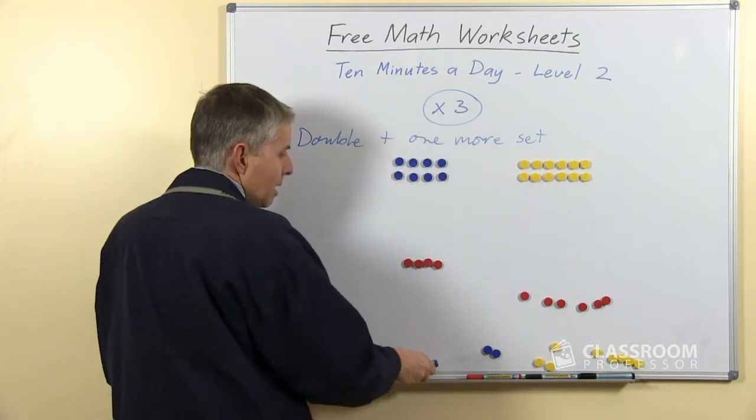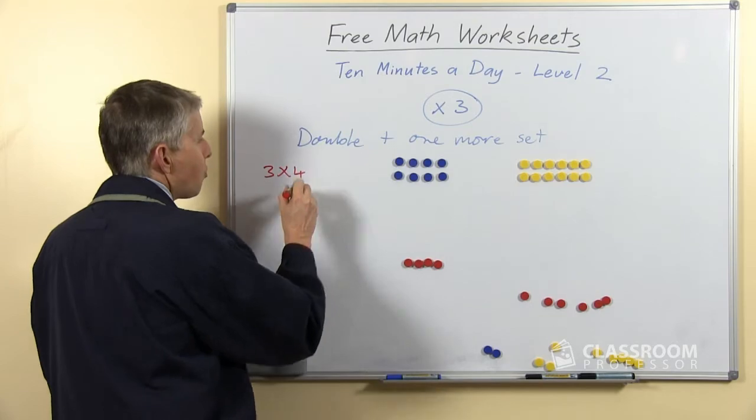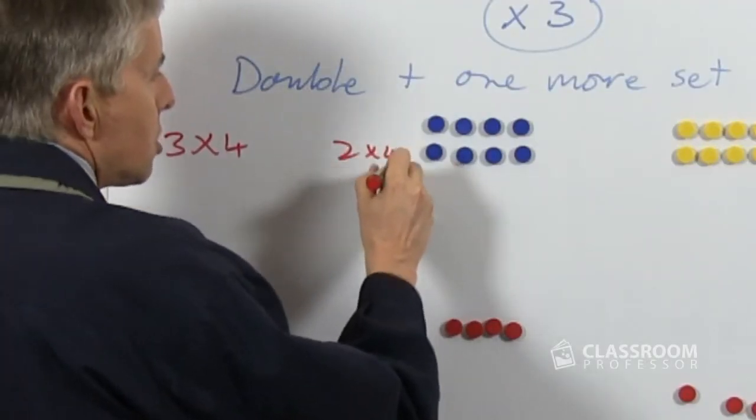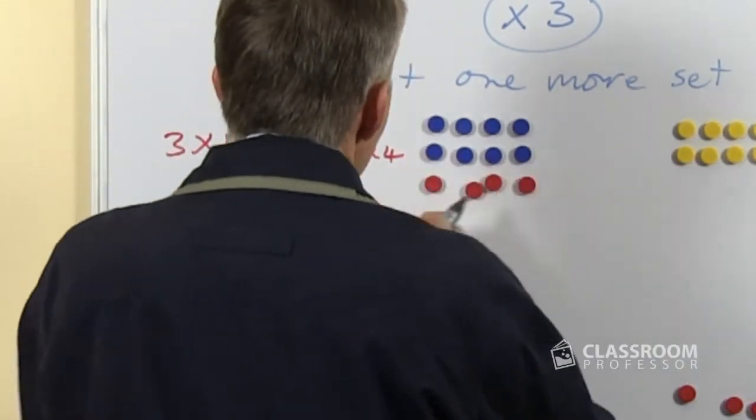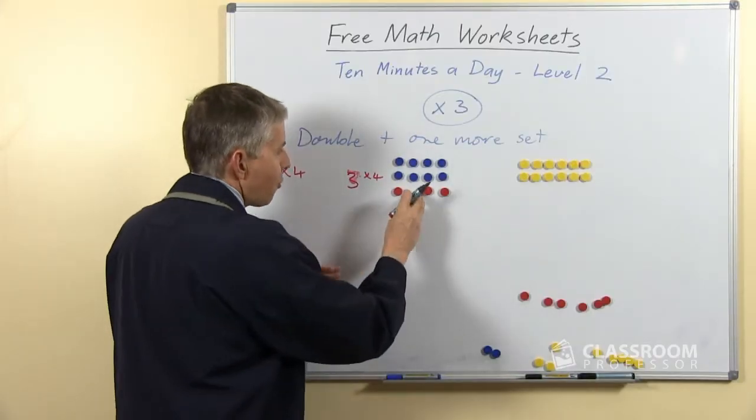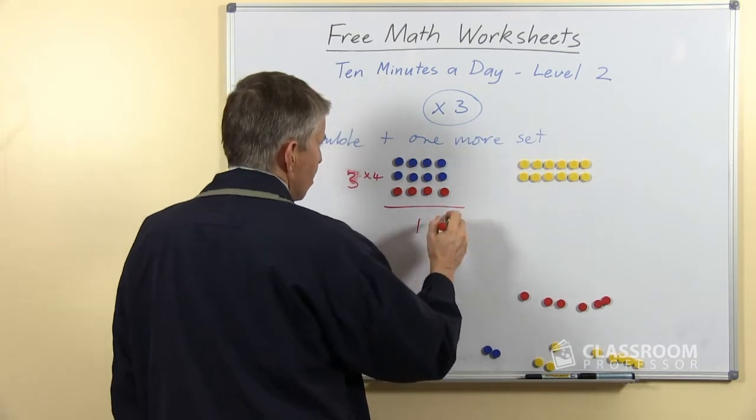So here's an example. Supposing our question was 3 times 4, we might say to the student, well what's 2 times 4? Of course they should know that already. 2 fours are 8, and then let's add another... sorry, add another 4. That makes 3 lots of 4, and of course the answer is 12.